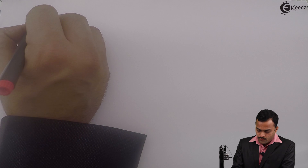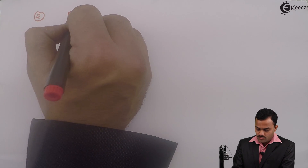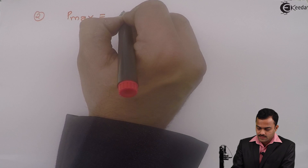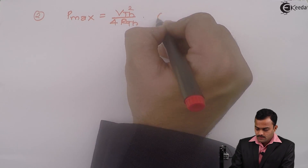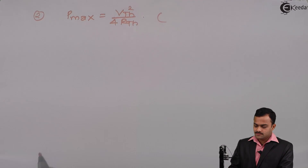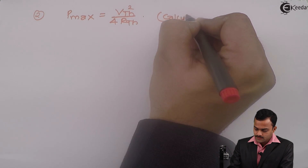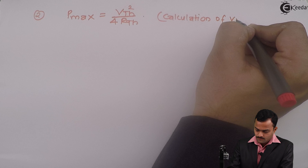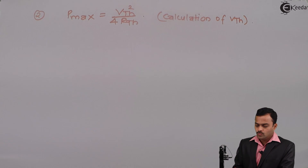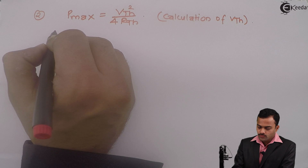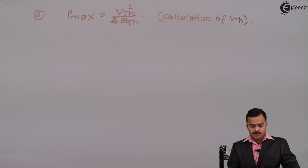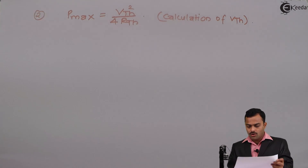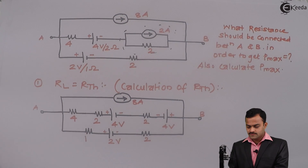Step number 1 is over. Step number 2: what is the maximum power transfer? Maximum power transfer P max equals VTH squared divided by 4 RTH. We have calculated RTH. Now we need to calculate VTH. We need to open circuit RL — that is the only thing we have to do. The rest of the circuit will remain as it is. I will redraw the circuit because in this circuit already there is no RL given.